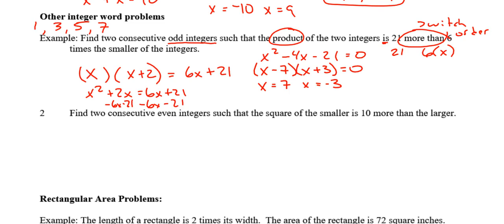So consecutive odd integers. My first solution pair would be 7, and if I add 2 I get 9. Negative 3 plus 2 gives me negative 1. So those are my possibilities. Pause the video and try number 2, then unpause and check your work.